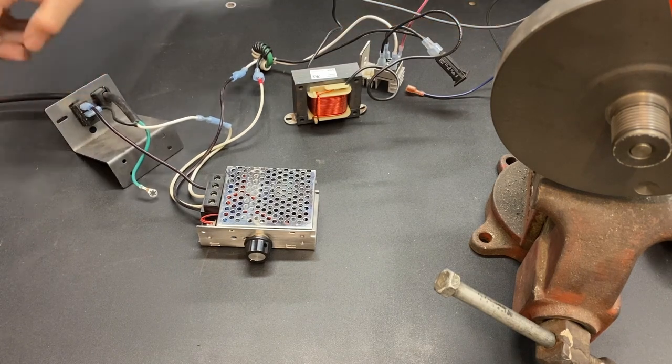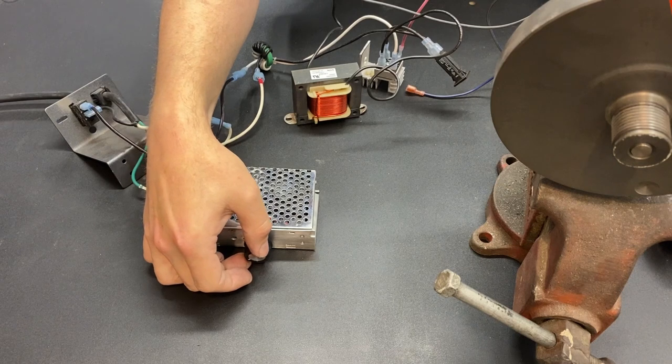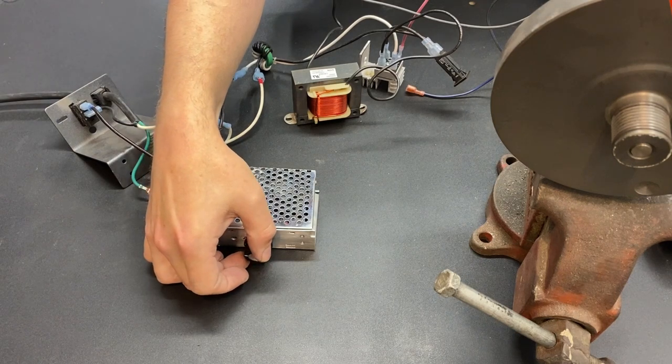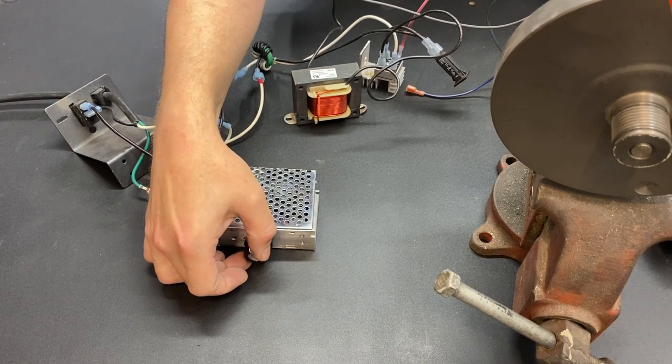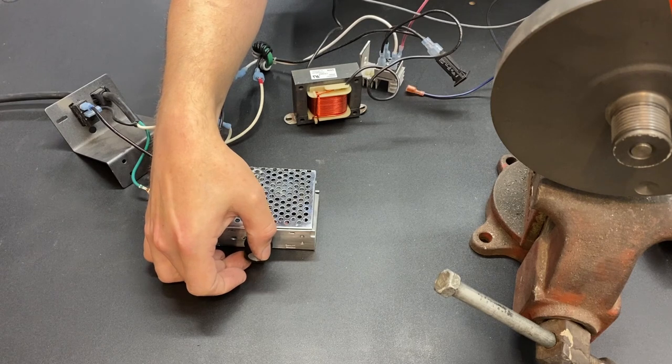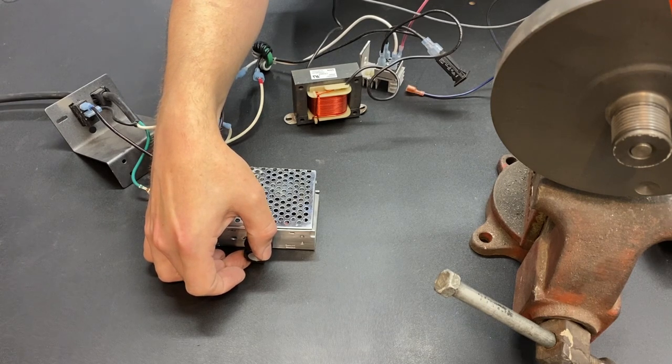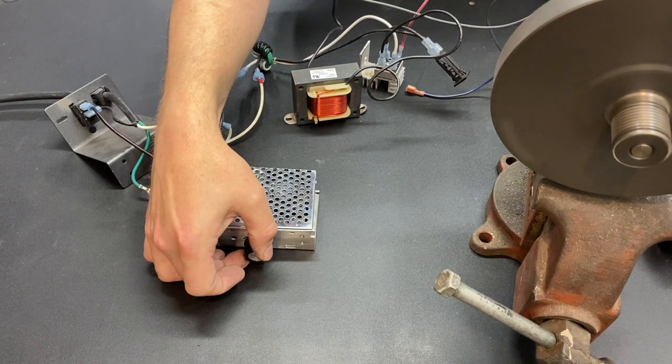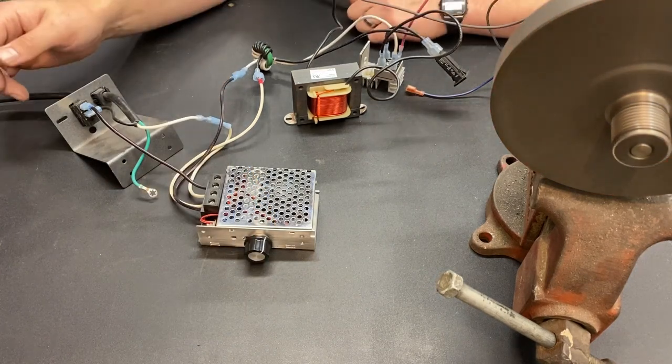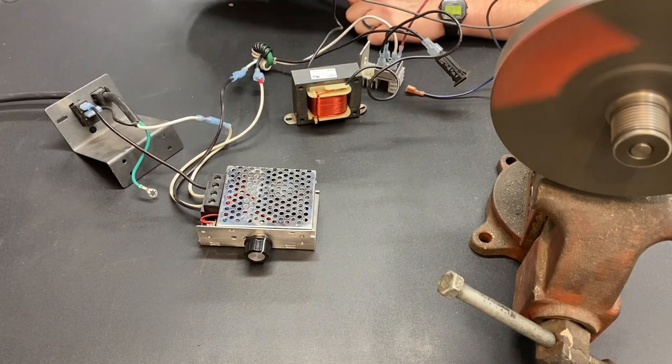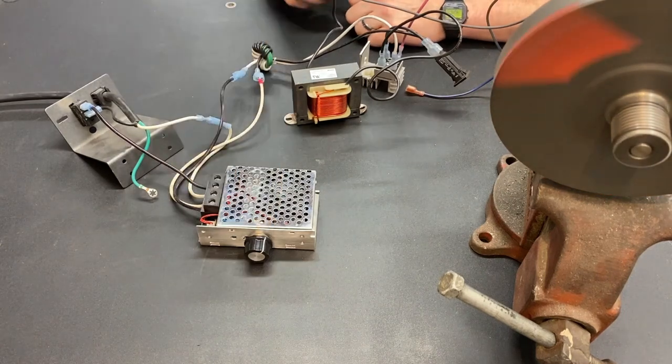We power it on, and we begin to turn the knob until the motor comes on. We're going to go real slow. I know I'm getting close. Once we have the speed that we need, go ahead and flip the power off, but do not touch the potentiometer.